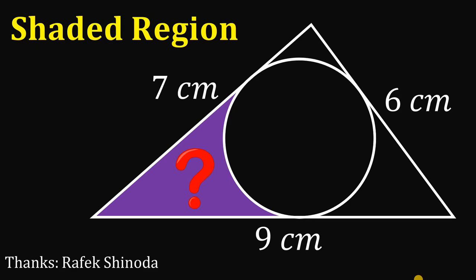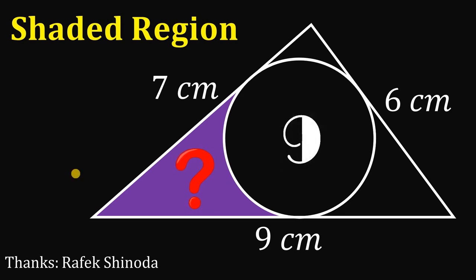For today's video, we will answer a math challenge given by one of our followers. The question goes like this: given a triangle with side lengths 6 cm, 7 cm, and 9 cm, what we're going to do is to find the area of the shaded region. Thanks to Mr. Shinoda for suggesting this question. You can pause this video if you want to give this problem a try.